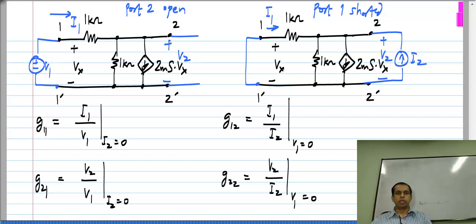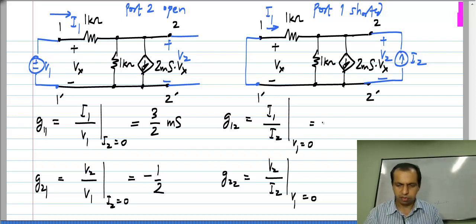I won't show the working out of these parameters in detail, please pause the video at this point and evaluate all of these things and compare it to the answers that I will give. So, for this circuit this turns out to be 3 by 2 millisiemens and this is minus half, minus half, and half a kilo ohm.